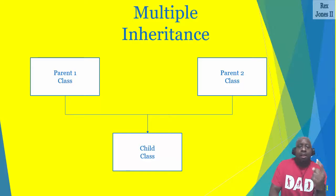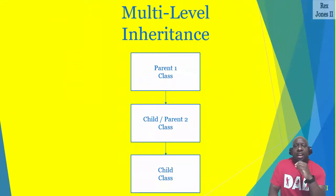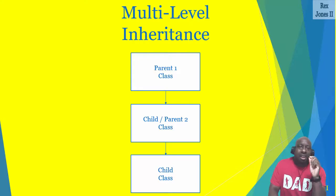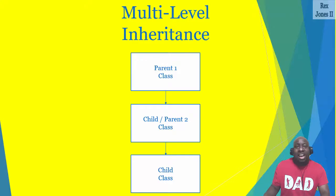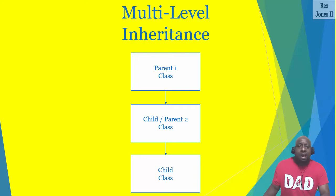Here's a diagram of multiple inheritance — we see the child class at the bottom inherits from parent one and parent two. For multi-level inheritance, we see there are two child classes and two parent classes. The class at the top is only a parent, while the class in the middle is both a child and a parent.